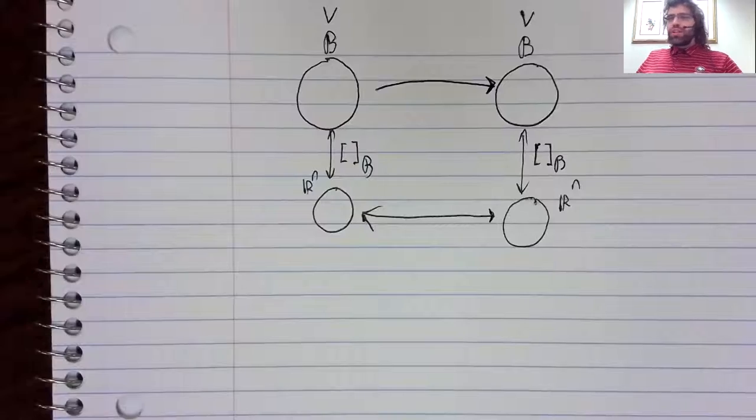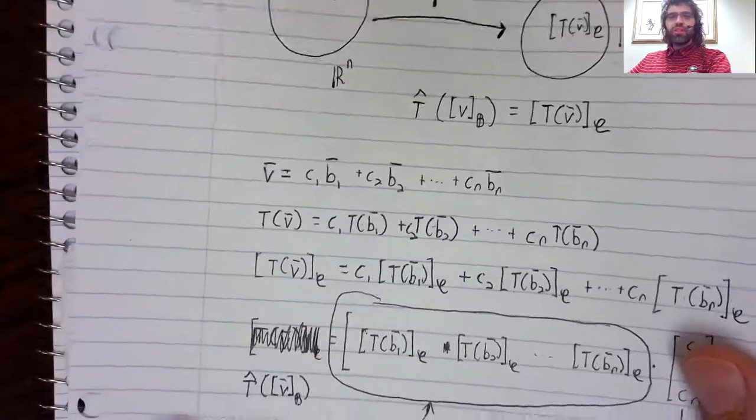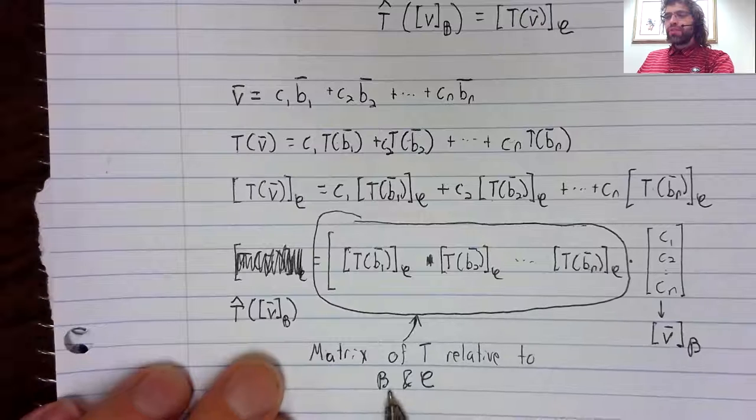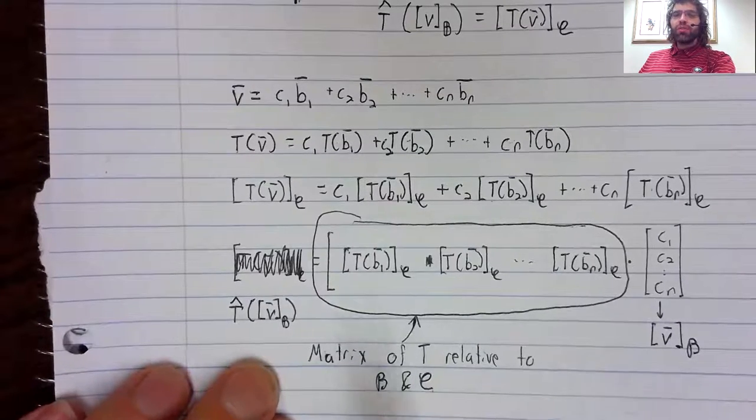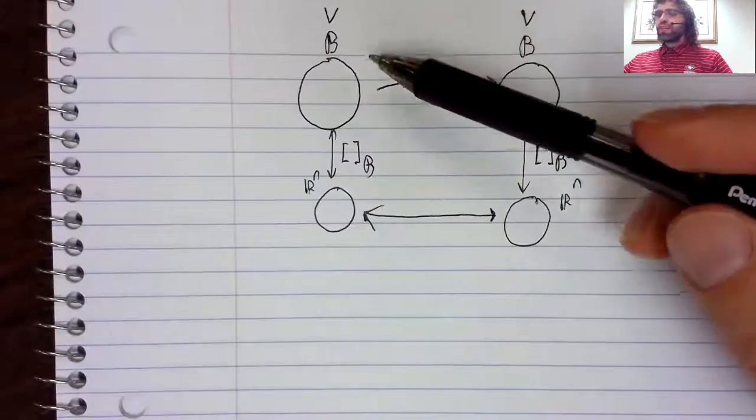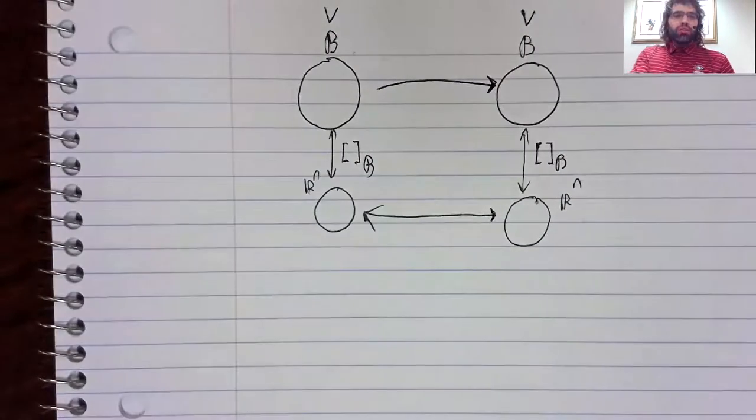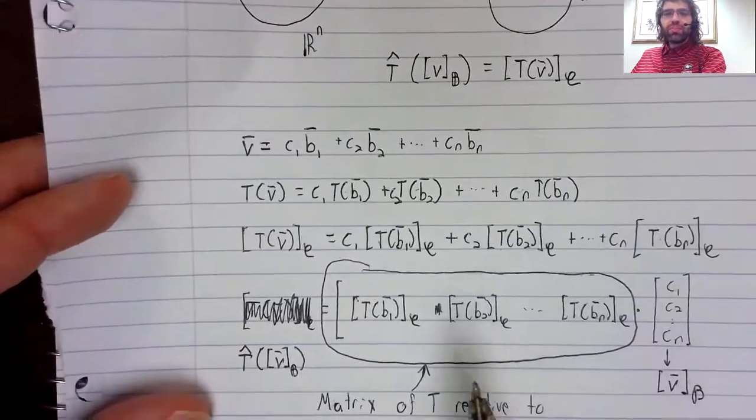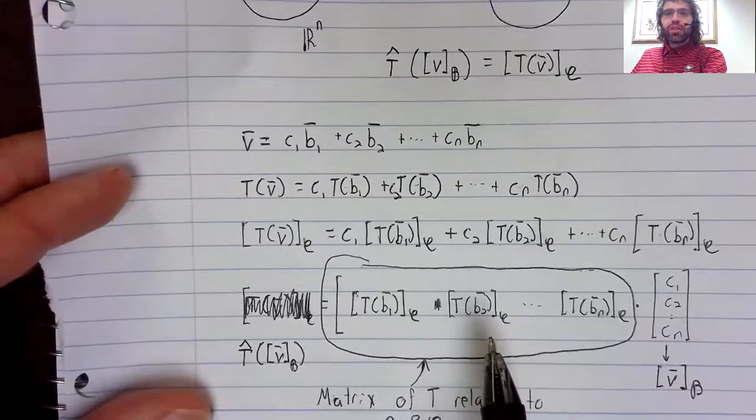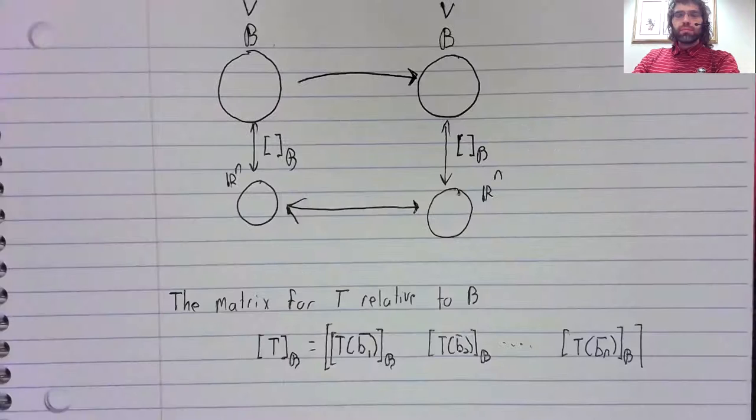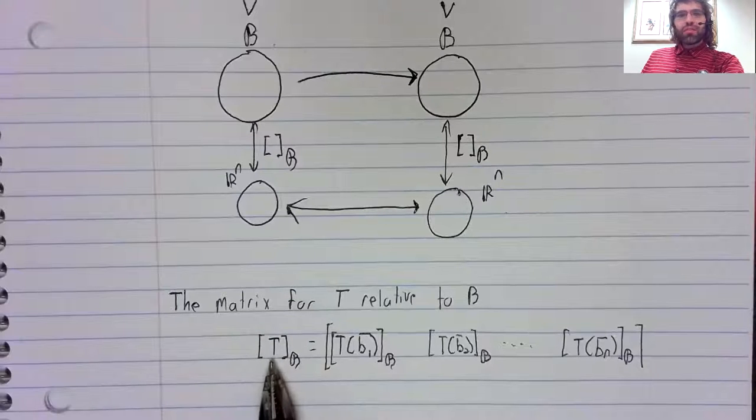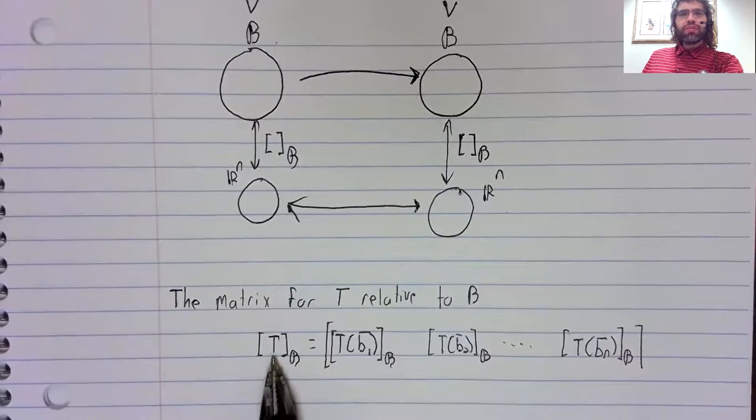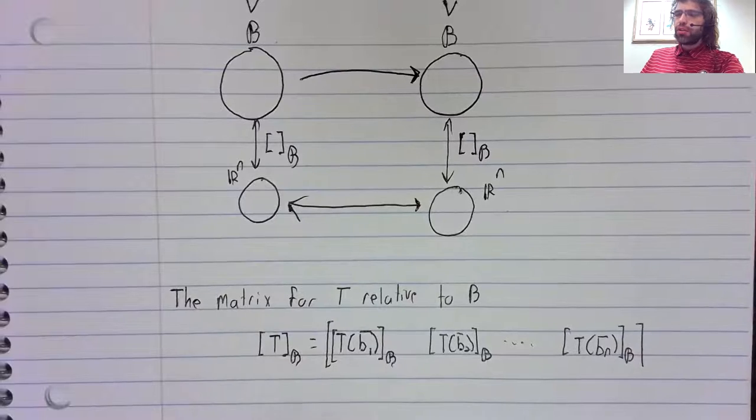Really, the only difference is that since we no longer have two different bases, we only need to talk about the matrix of T relative to B. And also, in this case, this matrix is going to get its own bit of notation, like the coordinate vector notation, except instead of a vector, we have the transformation here in brackets.